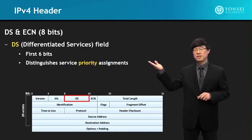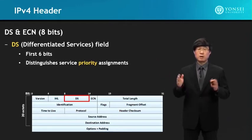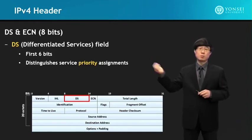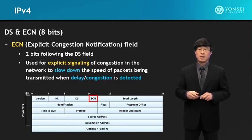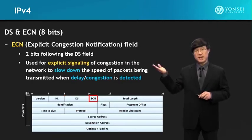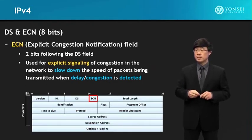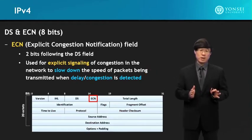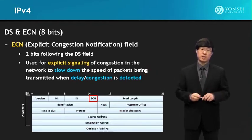The DS (Differentiated Services) and ECN bits are combined as one byte. DS is the first 6 bits and distinguishes service priority assignments. The ECN (Explicit Congestion Notification) uses the remaining two bits and is used for explicit signaling of congestion in the network, to slow down the speed of packets being transmitted when there is delay or congestion detected.